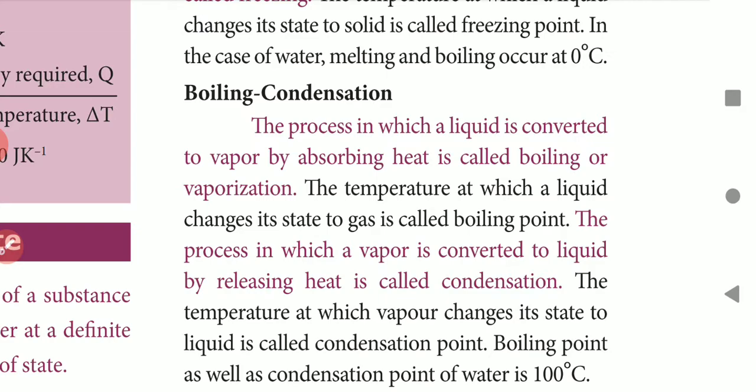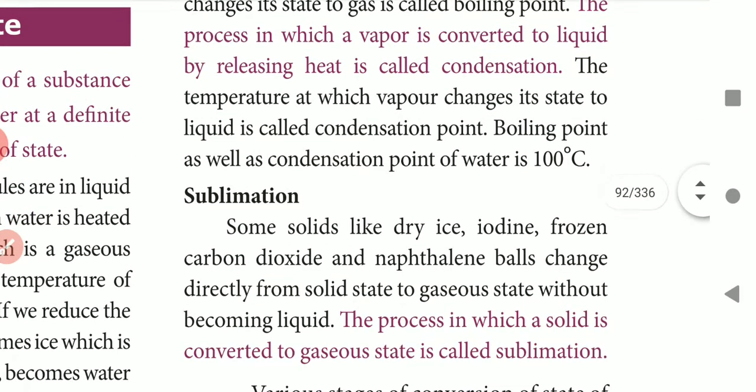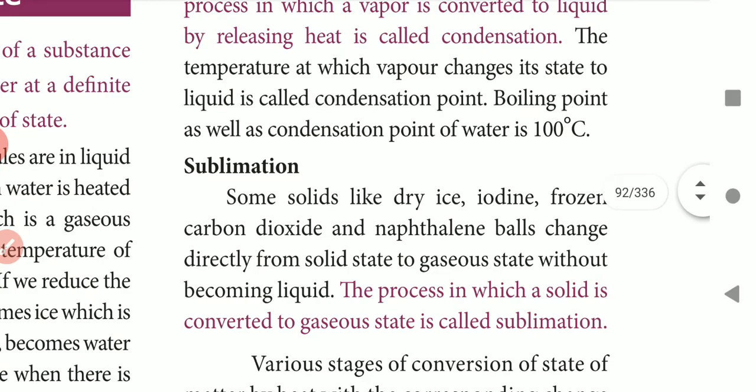The reverse process is condensation. The process by which vapor is converted into liquid by releasing heat is called condensation. The temperature at which vapor changes its state to liquid is called the condensation point. The boiling point and condensation point of water is 100 degrees Celsius.